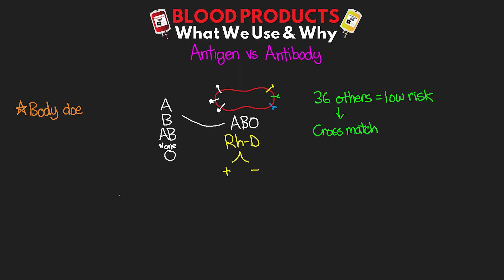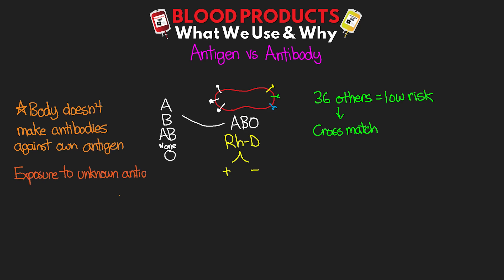Our bodies aren't going to make antibodies against our own antigens. But if there is an exposure to an unknown antigen, the immune system will actually make antibodies against this foreign antigen. For the ABO antigens, we're actually commonly exposed to these as an infant thanks to a certain bacteria, and thus we develop the antibodies for the ABO antigens without any initial blood exposure. For the others, though, these do require an exposure to that blood antigen typically before we build up those antibodies.